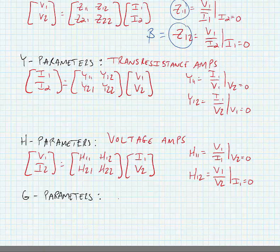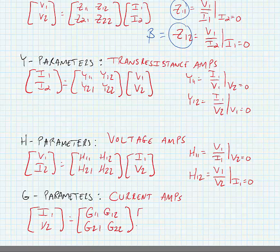G parameters are for current amplifiers. These are the opposite of H parameters in the sense that we have I1 and V2 at the output. We have our G matrix, and then we have V1 and I2.